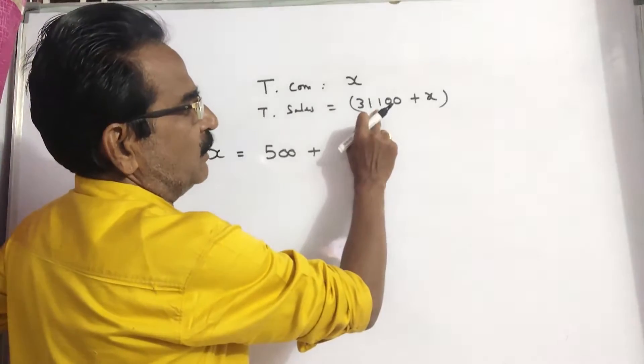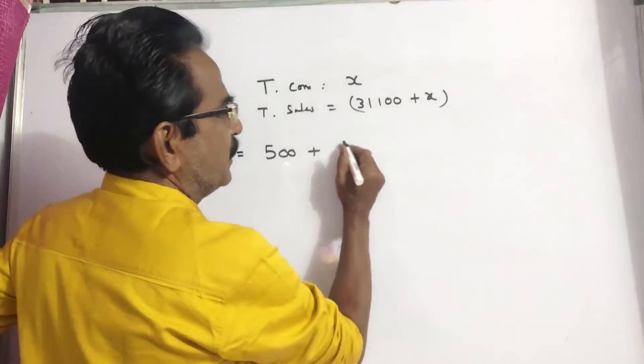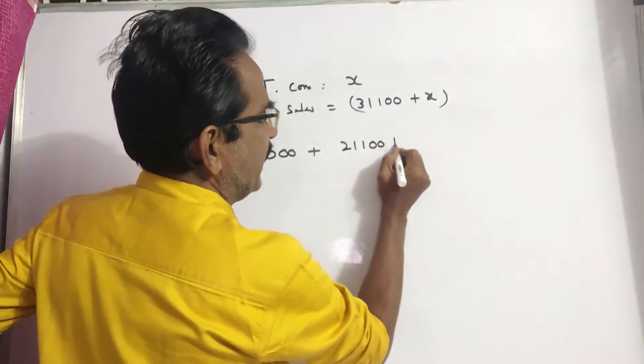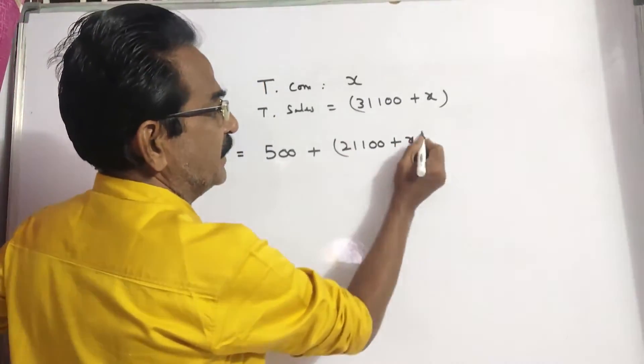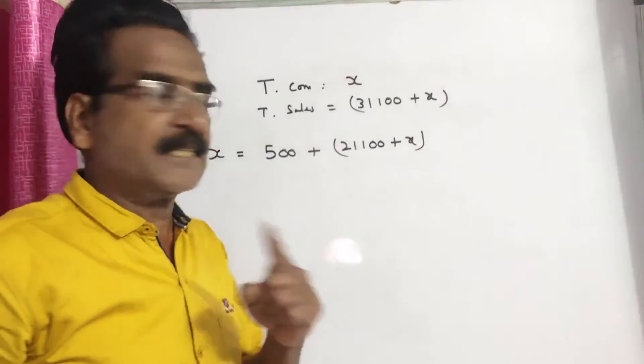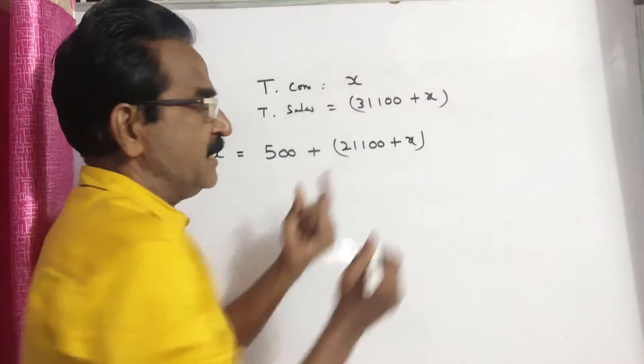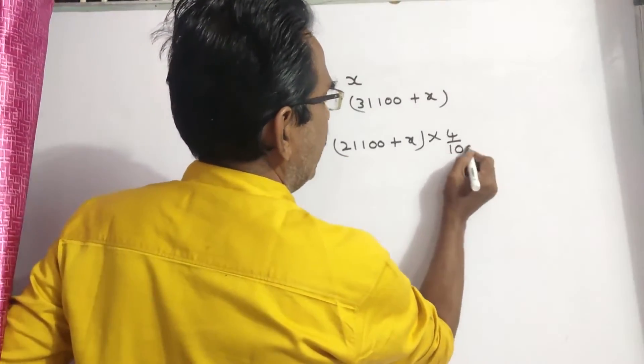So, 31,100 minus 10,000 is 21,100 plus X. So, he gets 4% commission on these sales into 4 by 100.